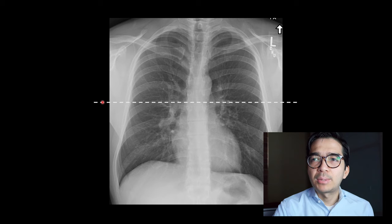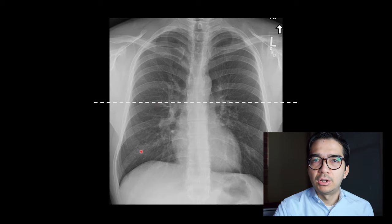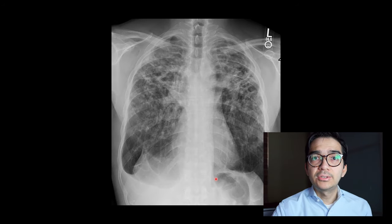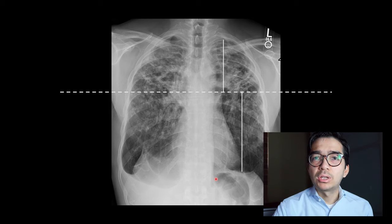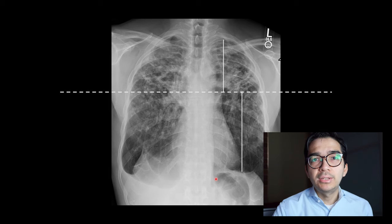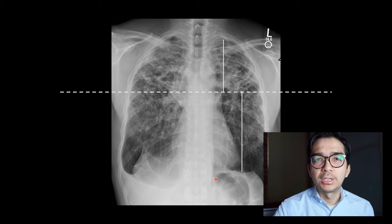In this example, I drew a horizontal line bisecting the hyla, and you can see it's about equal above and below. Now in this case, if we bisect the hyla, there's a lot more lung below that line compared to above that line, which means that this person has upper lung predominant disease.